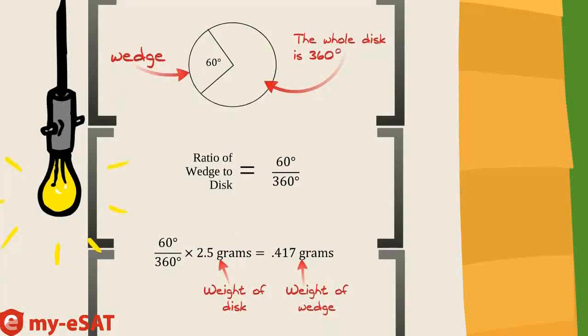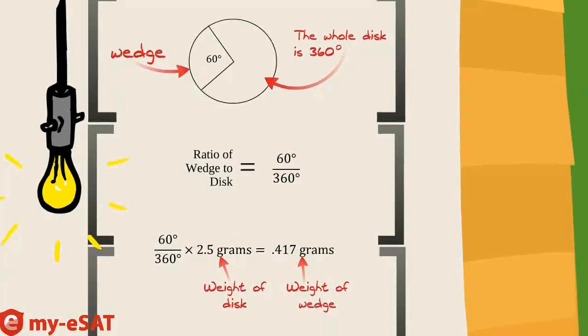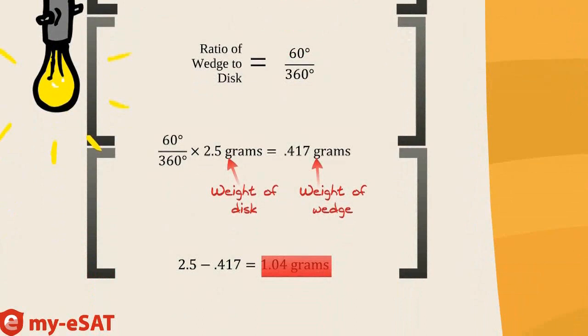Well, we can't stop there. Remember, we're trying to find out the weight of the remaining disc. So, subtract 0.417 from 2.5 to get 1.04 grams. And that makes 1.04 our correct answer. That's what you would bubble into your grid.